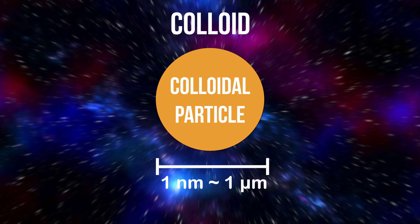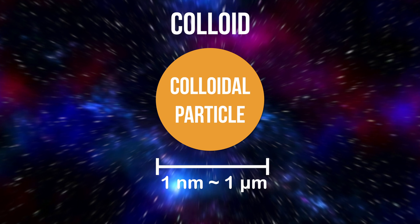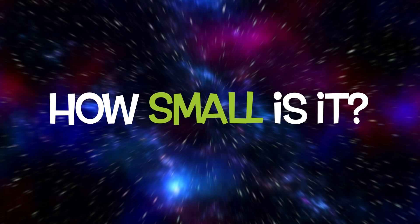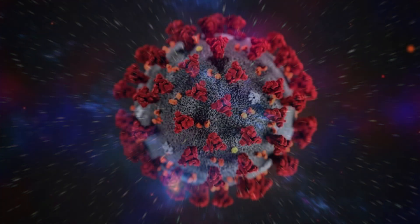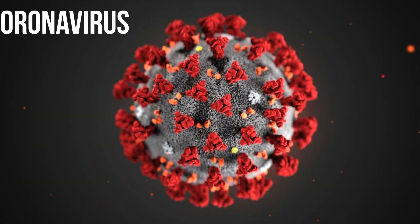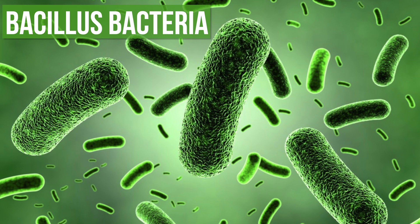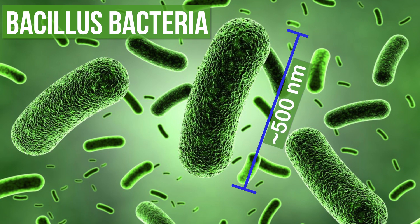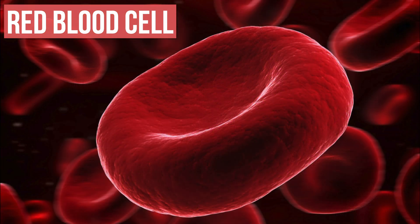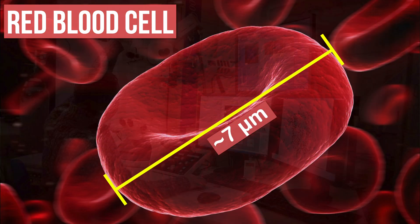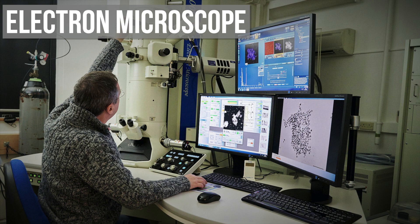To get an idea of how small an object is, let's compare the size of things around us. For example, coronavirus is about 100 nanometers, Bacillus bacteria is about 500 nanometers, and a red blood cell is about 7 micrometers in diameter — all measured by electron microscope.